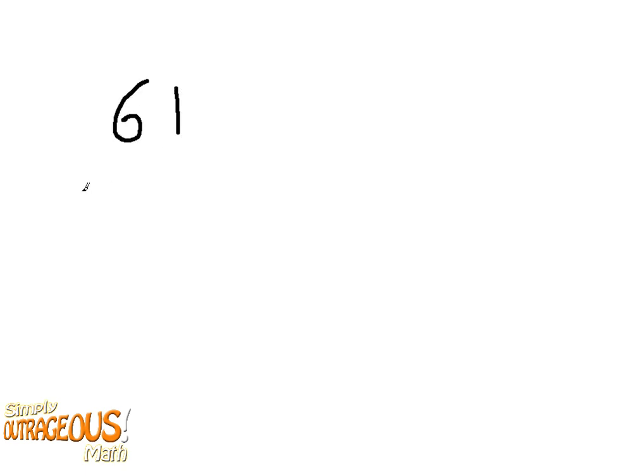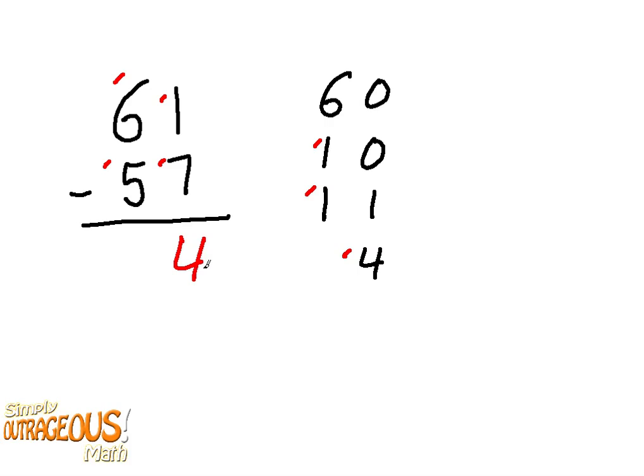61 minus 57, we start out with 60, 10, 11, 4. 60 minus 50 is 10, 10 plus 1 is 11, and 11 minus 7 is 4. 4 is your answer.